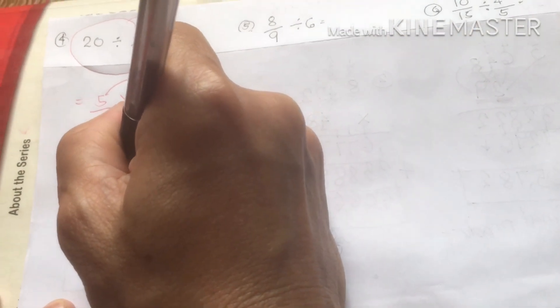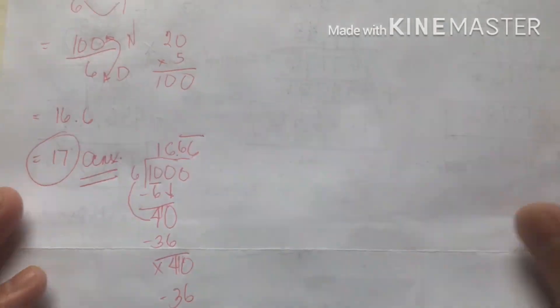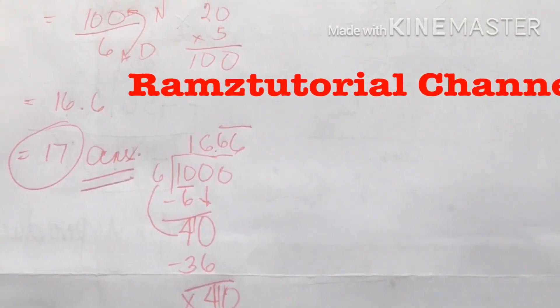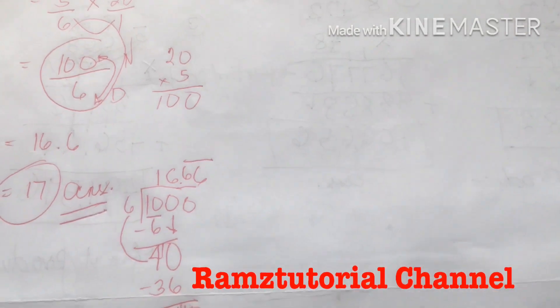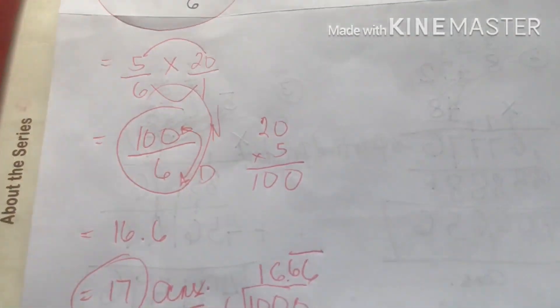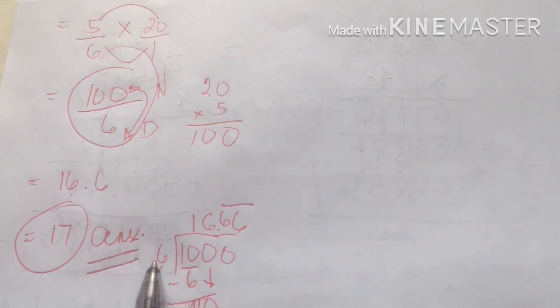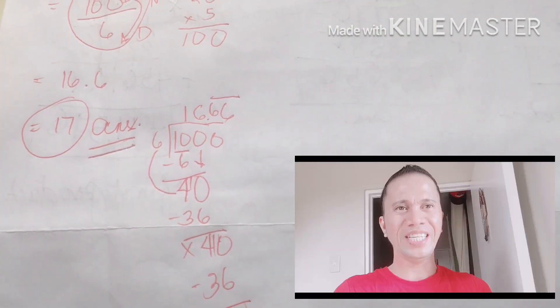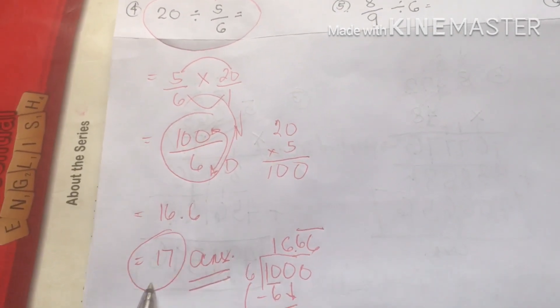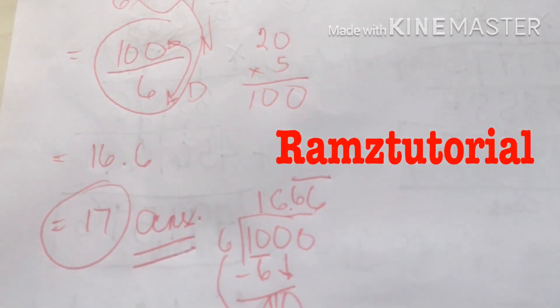Continuing the division, we get 16.6, which we round up to 17 as our final answer for number four. This was an improper fraction result, so we divided the numerator 100 by denominator six. Since the decimal repeats, we round off to 17 for our final answer.